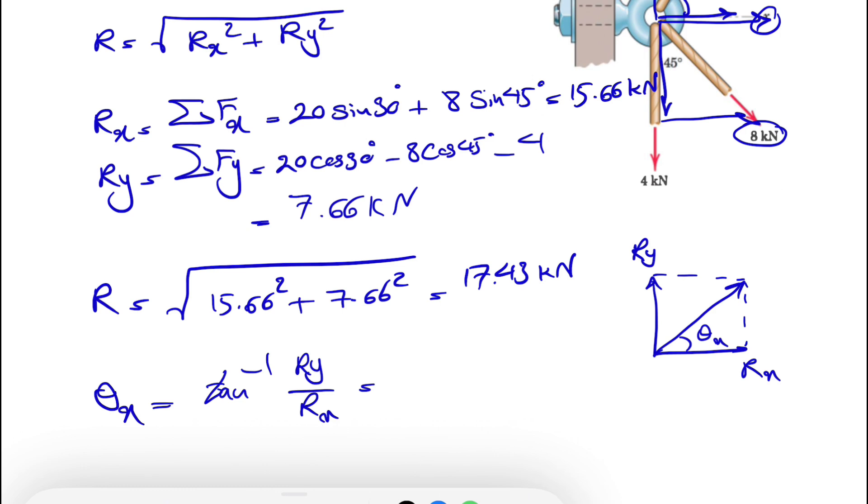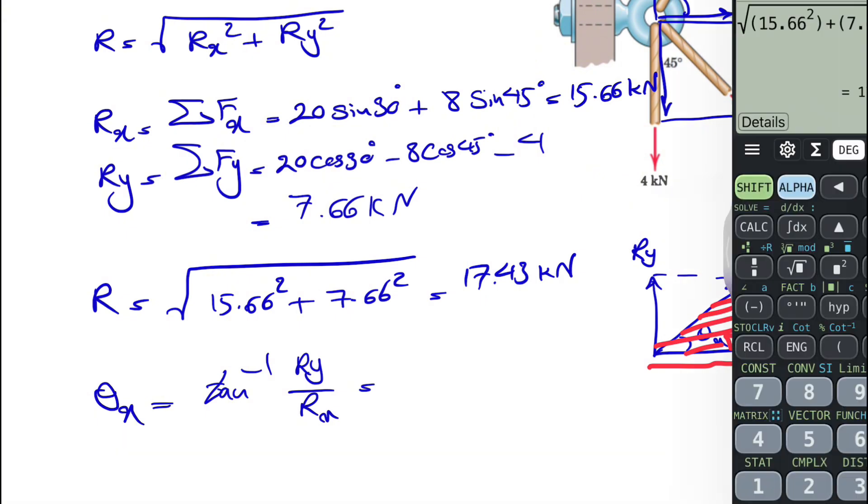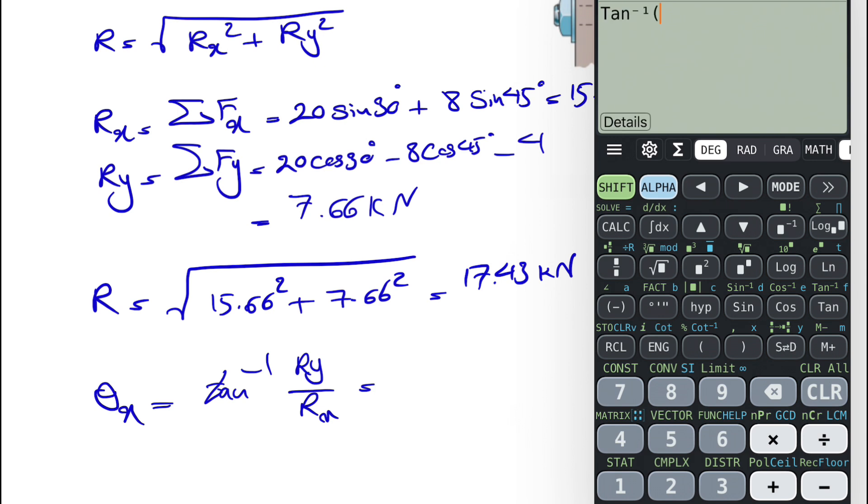All we need to do is find tangent inverse of 7.66 divided by 15.66, and this is going to give us 26.07 degrees. That would be the final answer for this question.